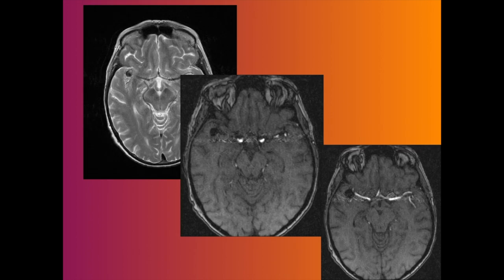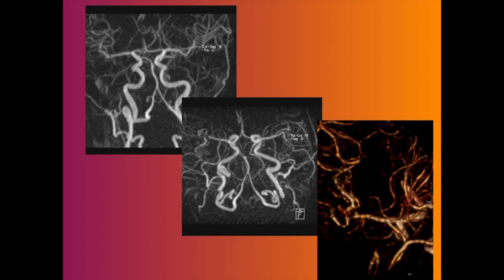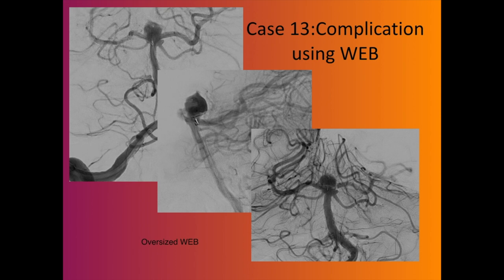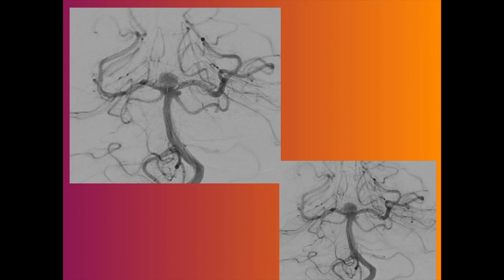Another case — I was proctoring a basilar termination where the WEB was slightly oversized. You can see restriction of flow in the left P1, and we had to drop an Atlas stent there to restore good flow. I understand some people do this intentionally, but I personally don't think that's a good idea — it's too expensive and you need to consider whether you really want to use a stent when you're already using a WEB.